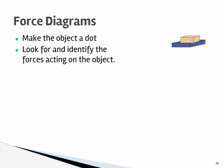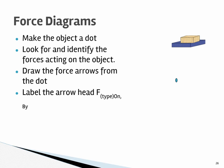Finally, you have an object on a table. So reduce the object to a single dot. Look for and identify the forces acting on it. I see gravity and normal. Draw those force arrows from the dot. And label those arrow heads. I have the force of gravity on the block by the earth and the force of normal on the block by the table.